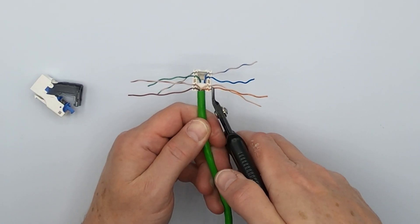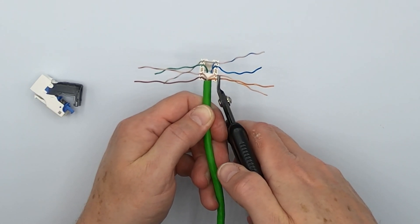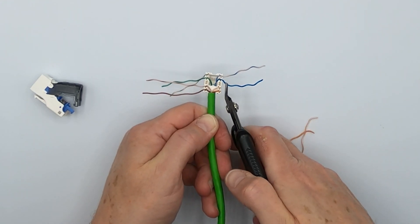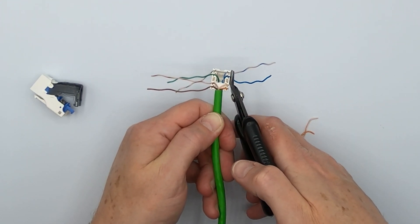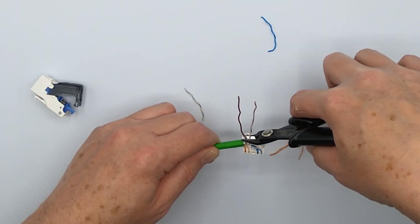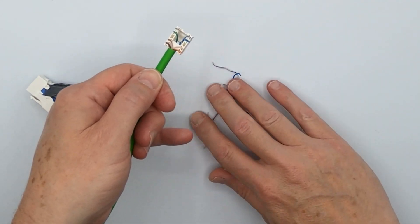The next step in this little procedure is simply flush cutting off the conductors. Take your flush cutters, lay them against the housing of this cap here, and simply flush cut them off. You don't want any excess sticking out, and that cap is now ready to be put into the jack.